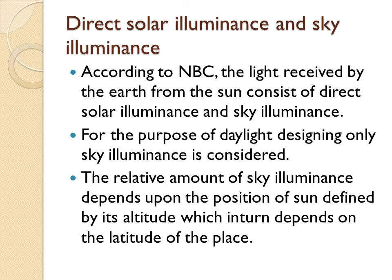According to the National Building Code, light received by the earth from the sun consists of direct solar illuminance and sky illuminance. For the purpose of daylight design, only sky illuminance is considered — solar illuminance is not, as sky illuminance is available throughout the entire day while solar illuminance is available for only a very short period. The relative amount of sky illuminance depends on the position of the sun, defined by its altitude, and also on the latitude of the place.